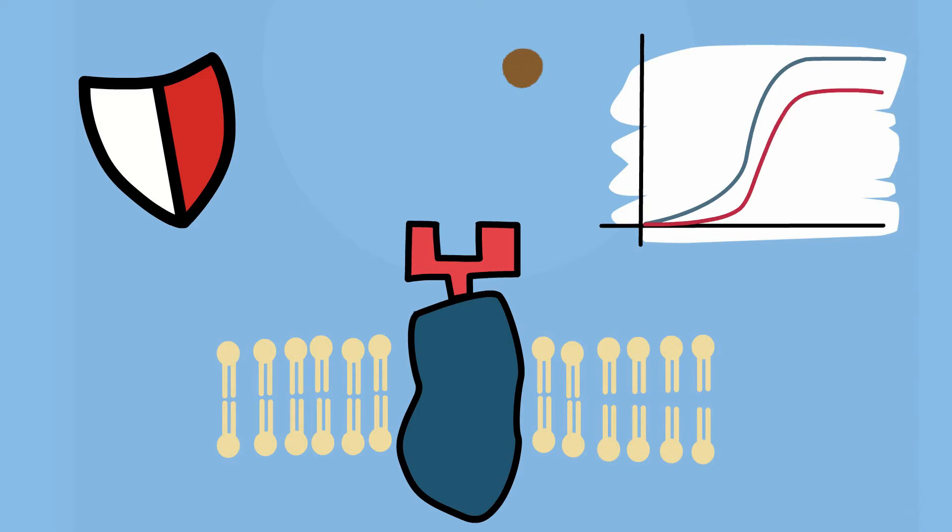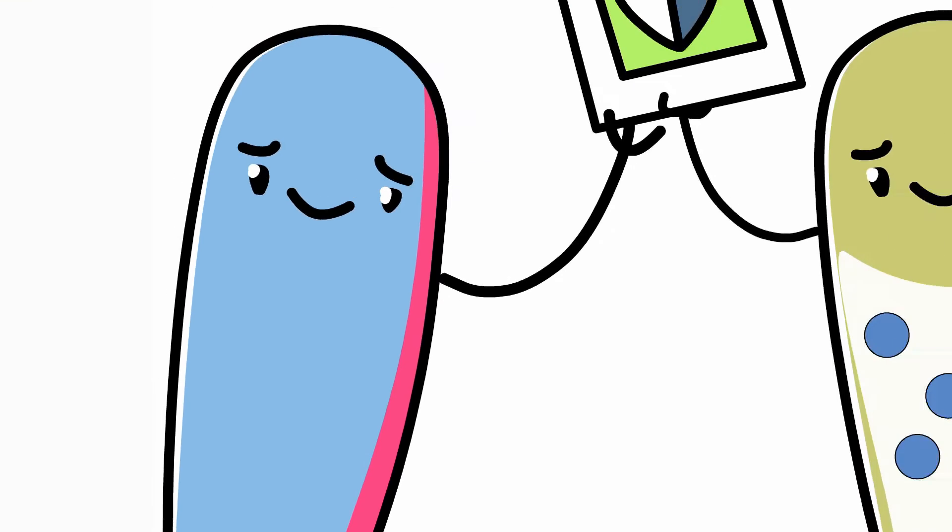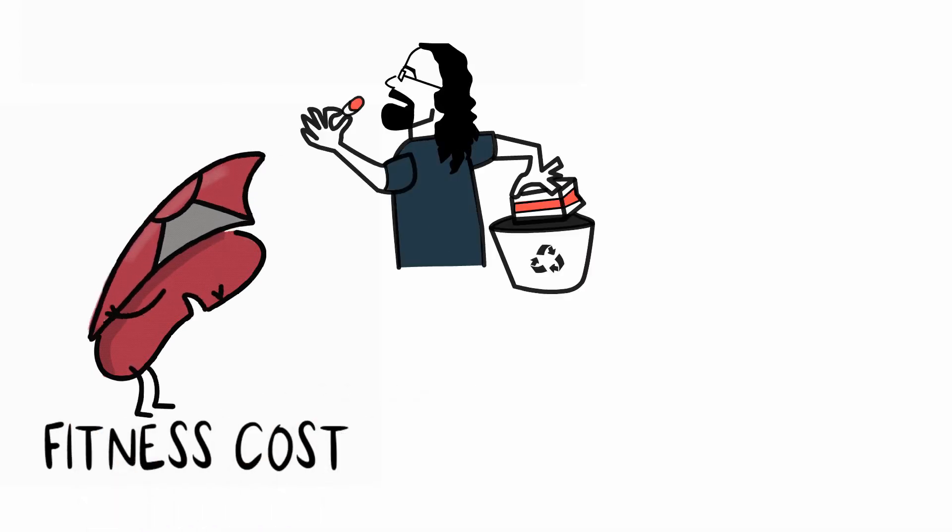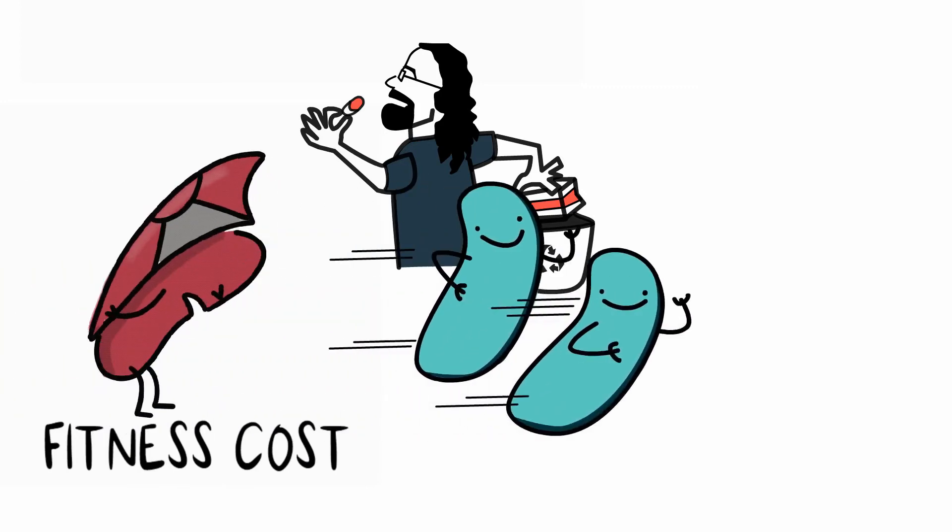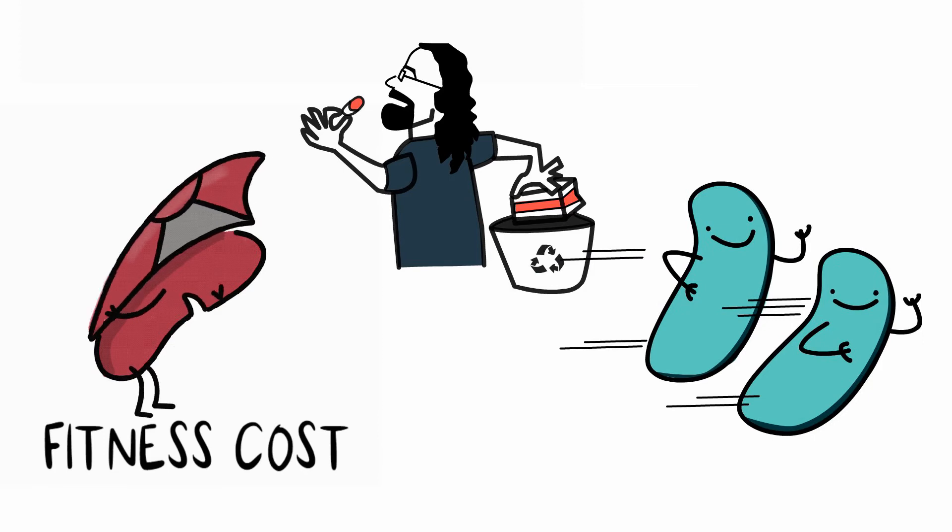Thus, when the antibiotic is absent, most resistance mutations actually slow down the growth of resistant bacteria. This negative effect is called the fitness cost of resistance and is important to us because if, for instance, a few susceptible bacteria survive an antibiotic treatment, the cost allows them to out-compete resistant bacteria once the treatment is over.